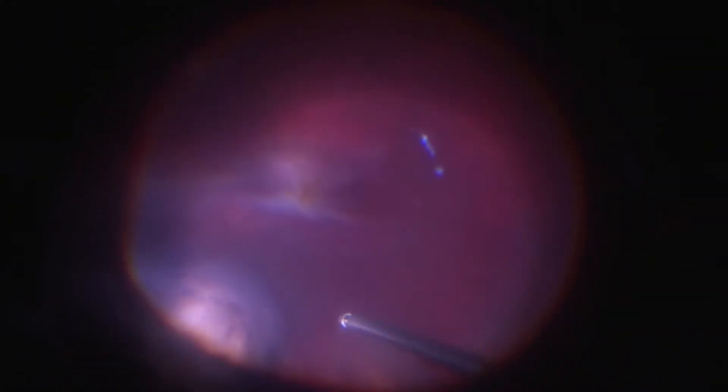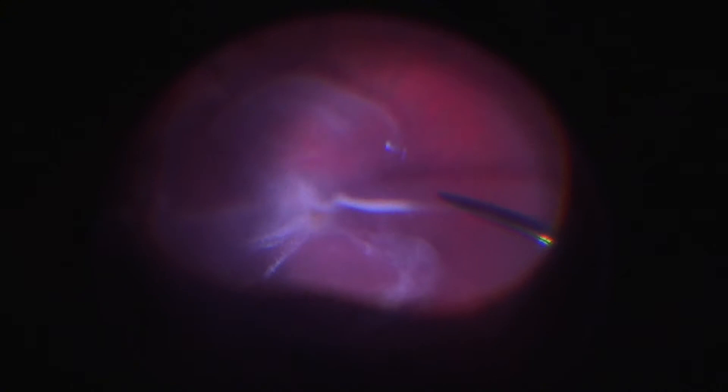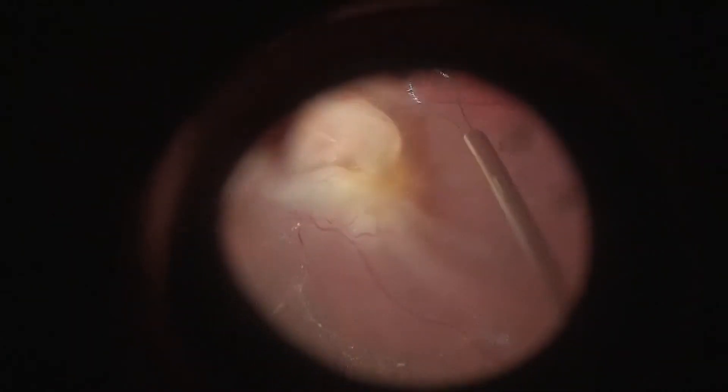Corvotrectomy is performed to reduce anterior to posterior traction and segment vitreous bands. A radial retinal fold is seen nasally due to retinal shortening. Triamcinolone acetonide stain facilitated identification of the split posterior hyaloid face.